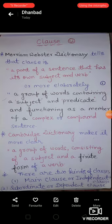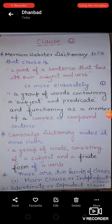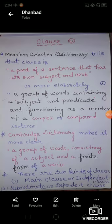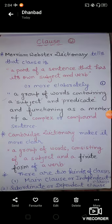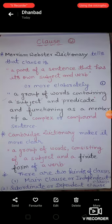Subject and predicate are the two main components of a sentence. So a clause is a group of words containing a subject and predicate and functioning as a member of a complex or compound sentence. When we talk about clauses, we must talk about sentence classification based on structure. A simple sentence is made up of only one clause, and a compound sentence is made up of two or more clauses where all the clauses are independent, or main clauses.